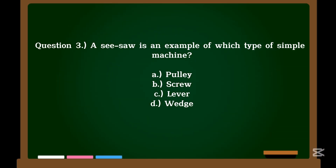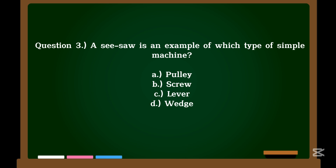Question 3. A seesaw is an example of which type of simple machine? A. Pulley. B. Screw. C. Lever. D. Wedge. Correct answer: C. Lever.